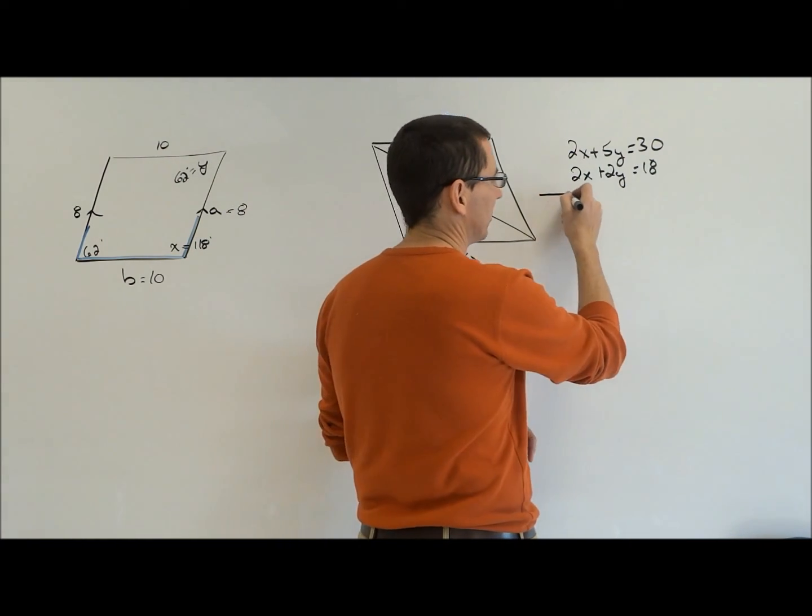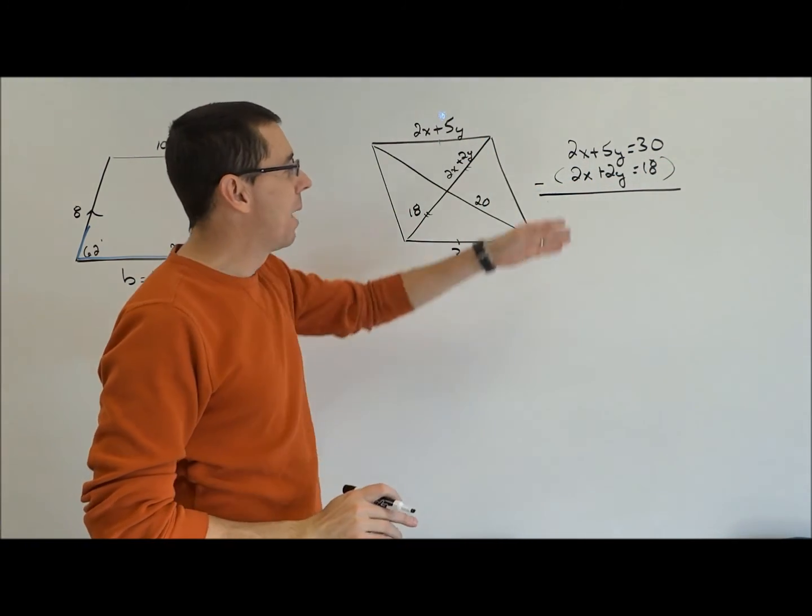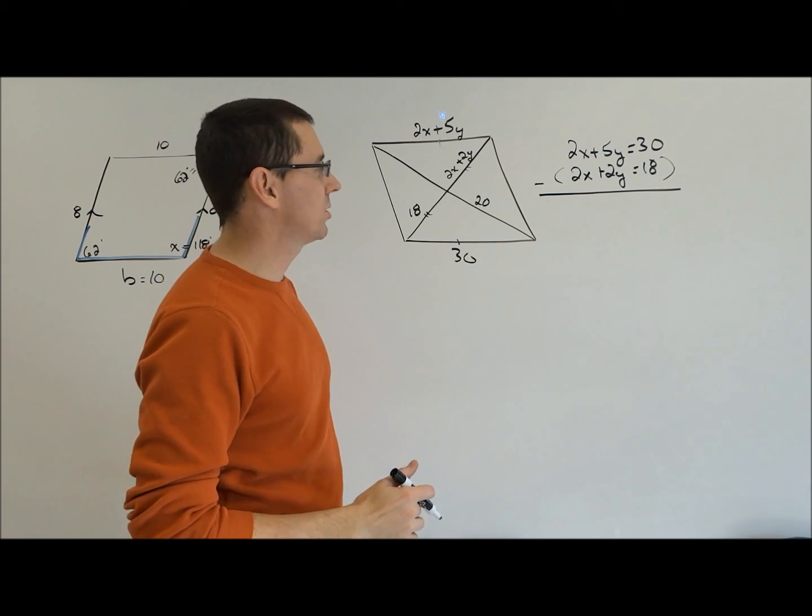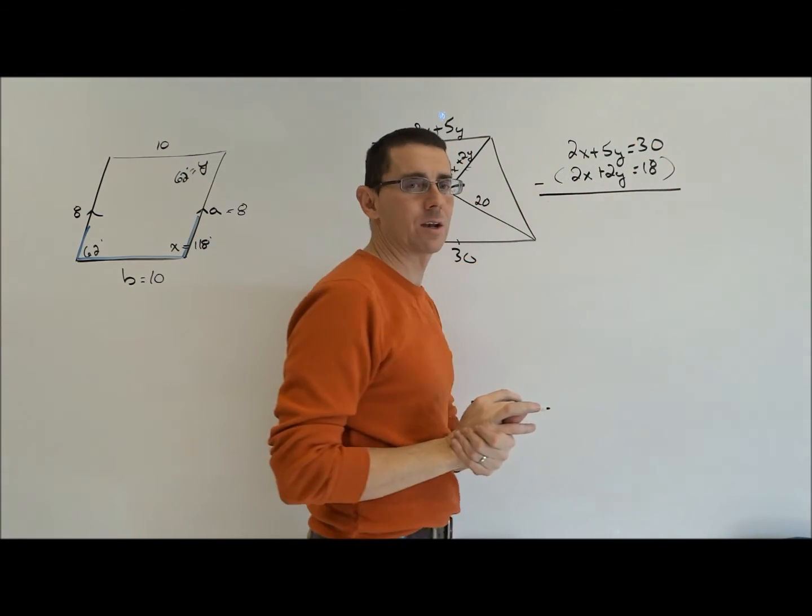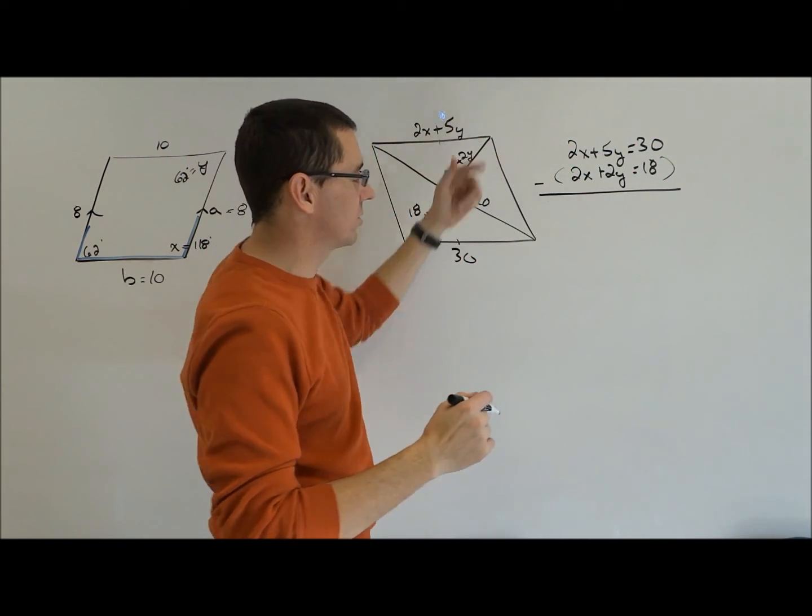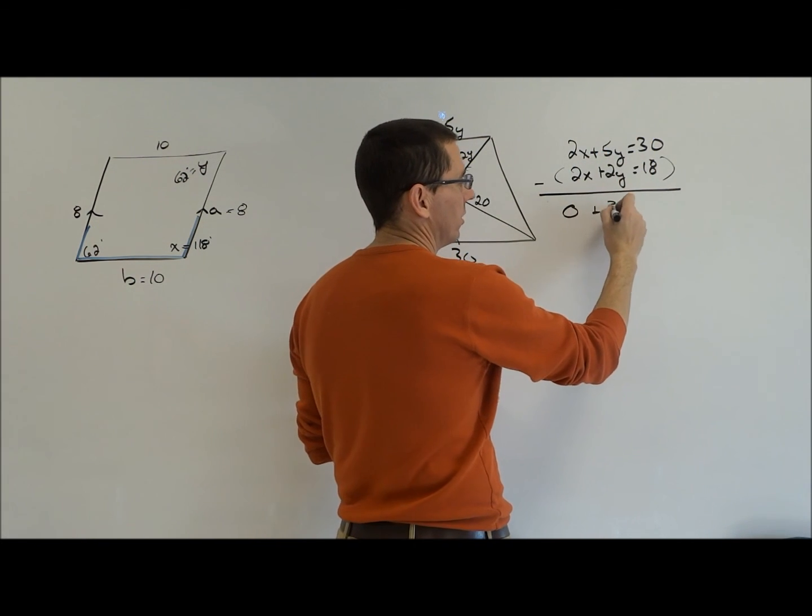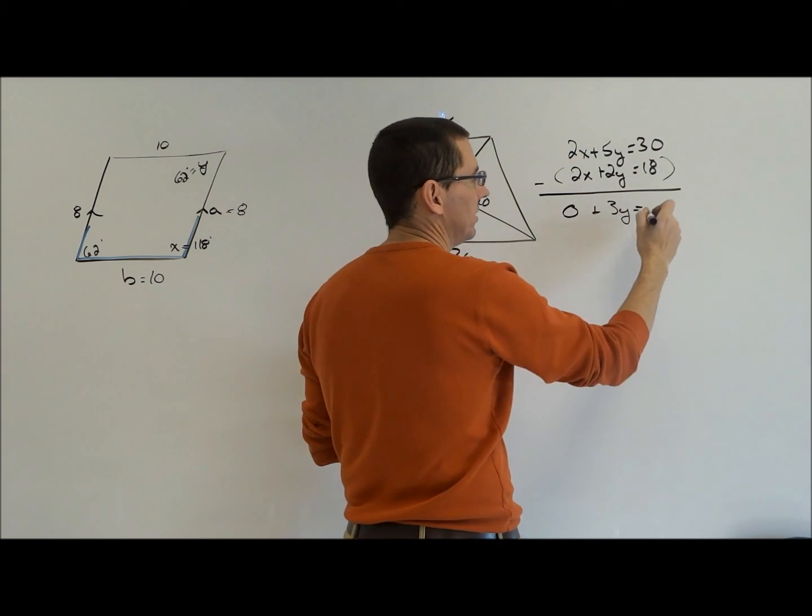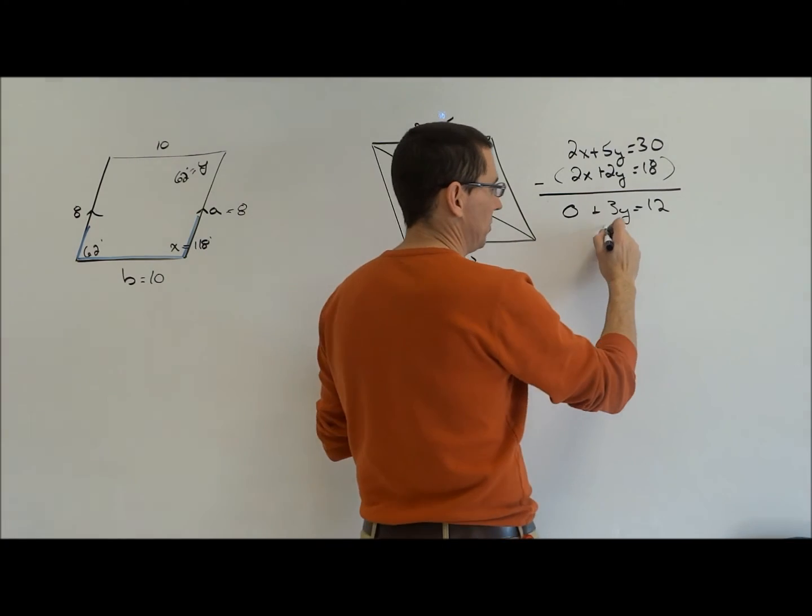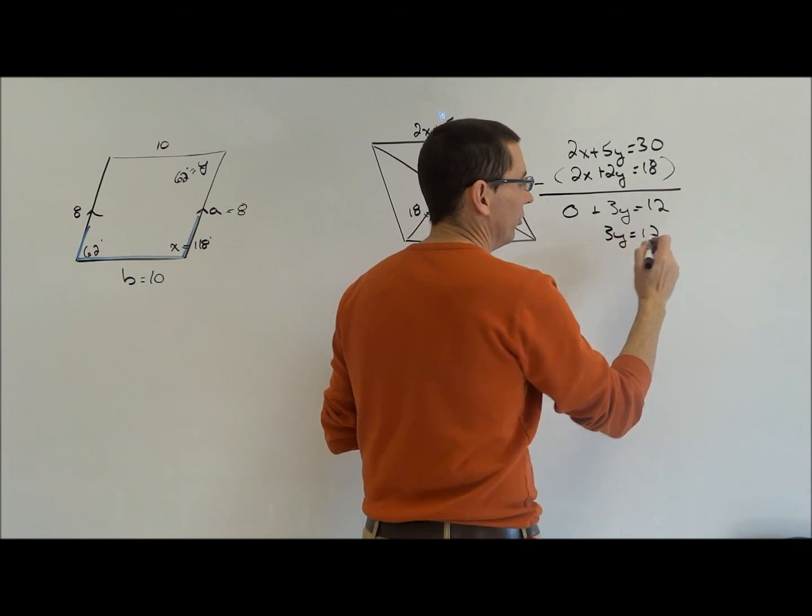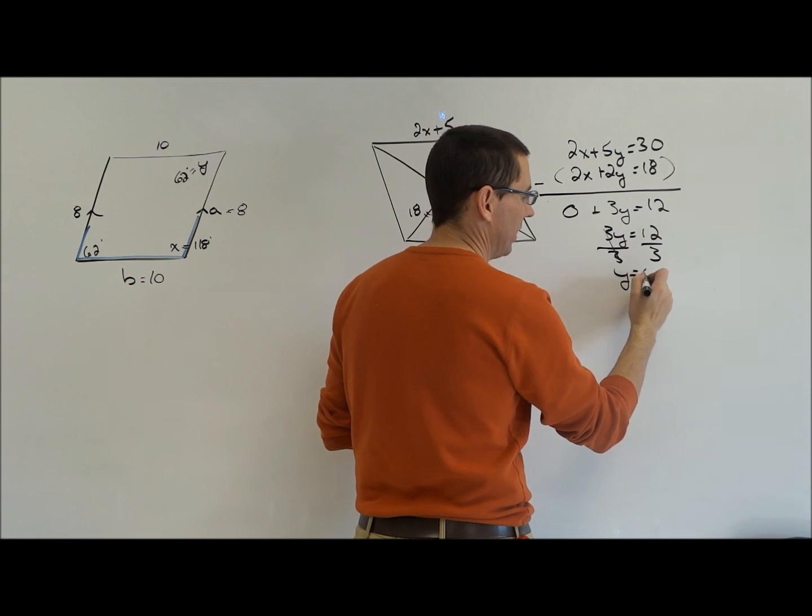And in this case it works out rather nicely because if I come up here and I just say, alright, subtract that whole equation from the one on top of it, my X terms are going to drop out. Now the biggest mistake I usually see people make is if I'm subtracting, that's going to change the sign of everything in that equation. So I've got 2X minus 2X is 0, right? 5Y minus 2Y is 3Y. 30 minus 18 is 12. Now, I mean that cleans up to just be 3Y equals 12. Real basic equation now that we can solve for Y, divide both sides by 3 and we're going to be left with Y equals 4.